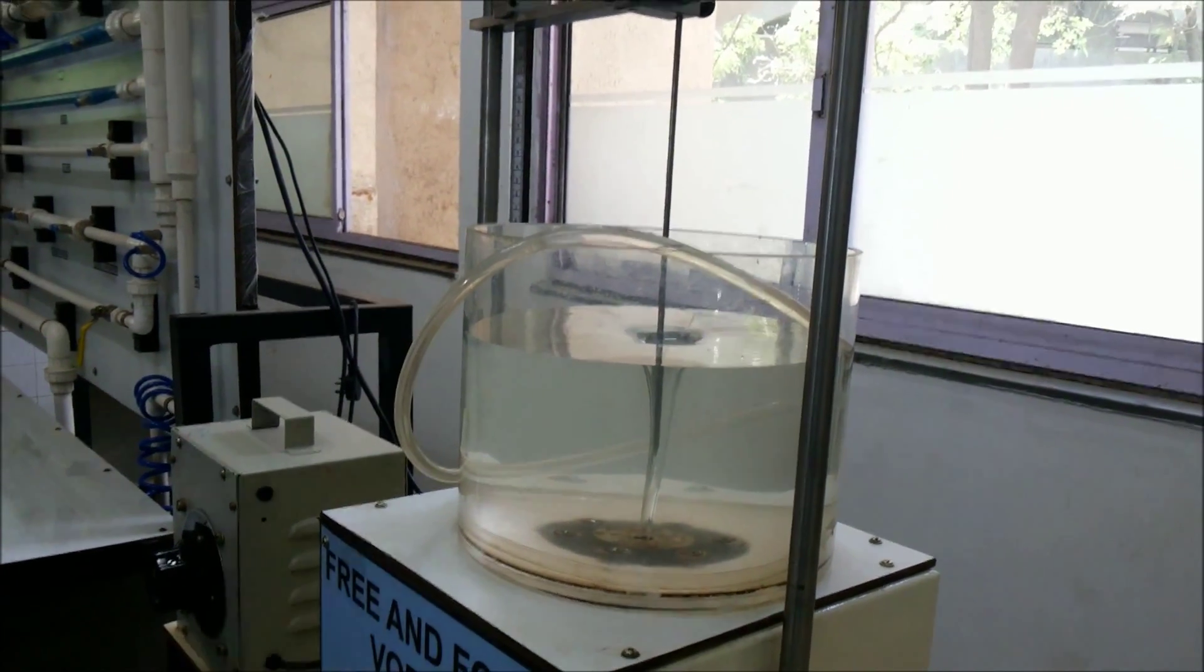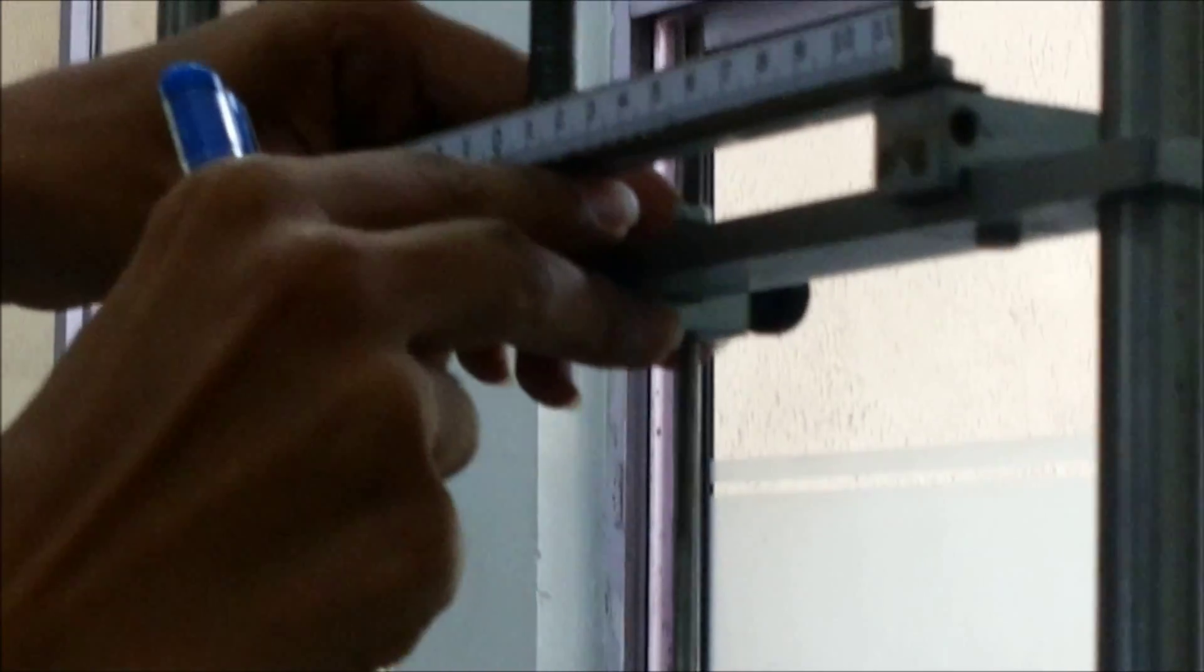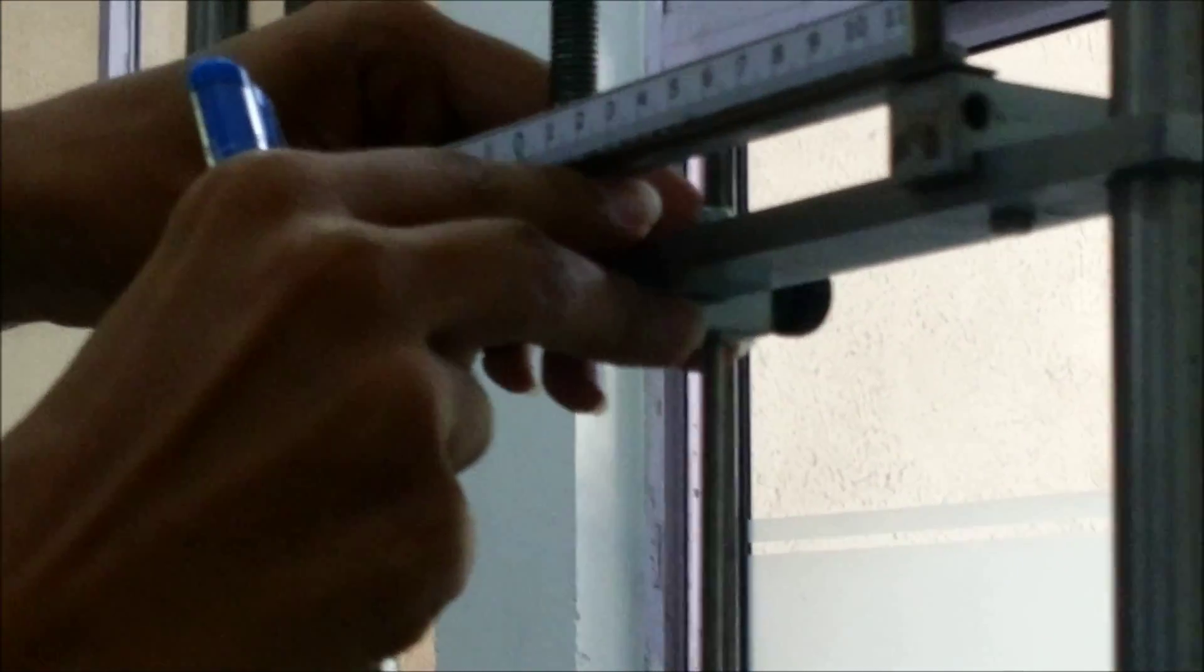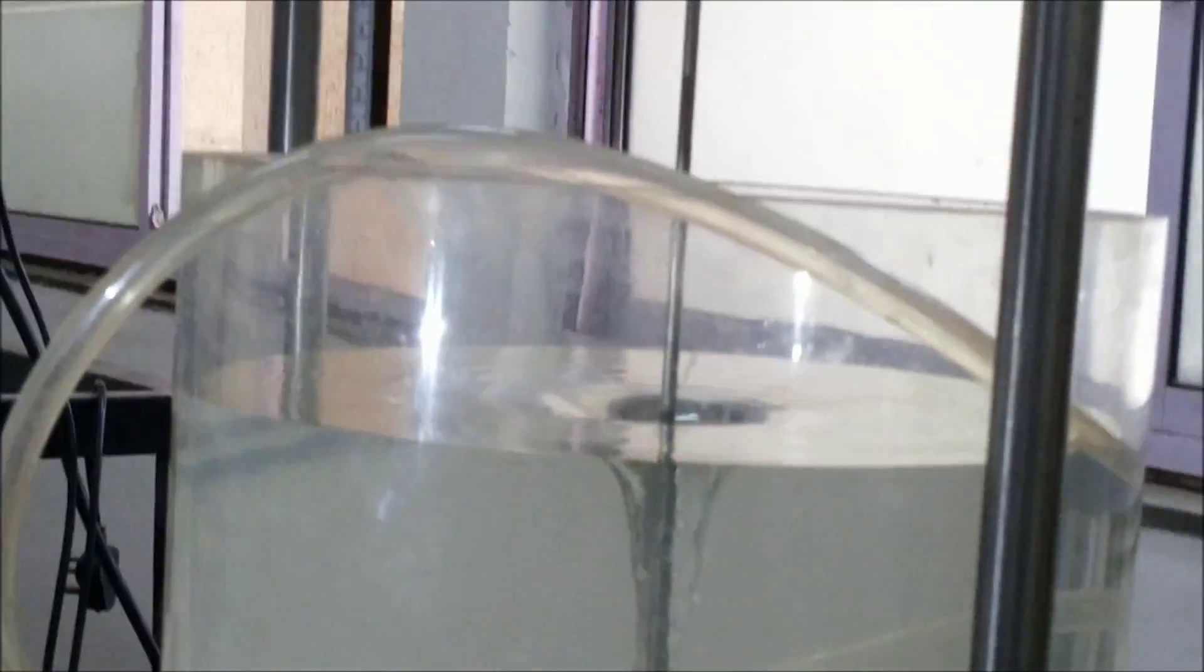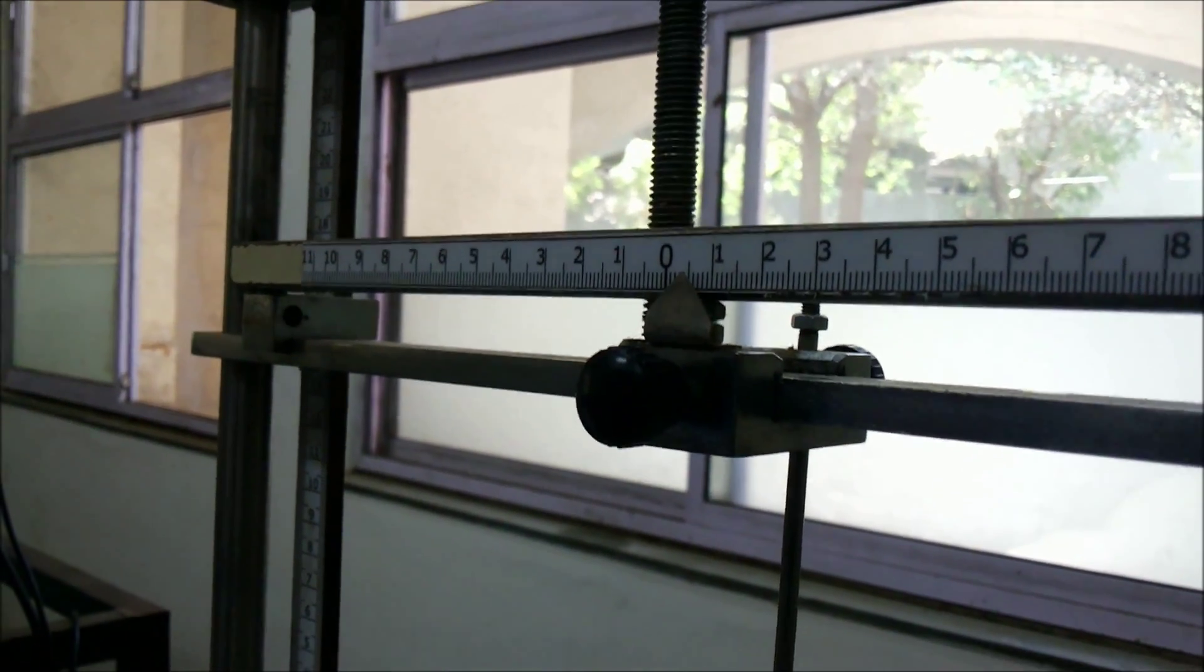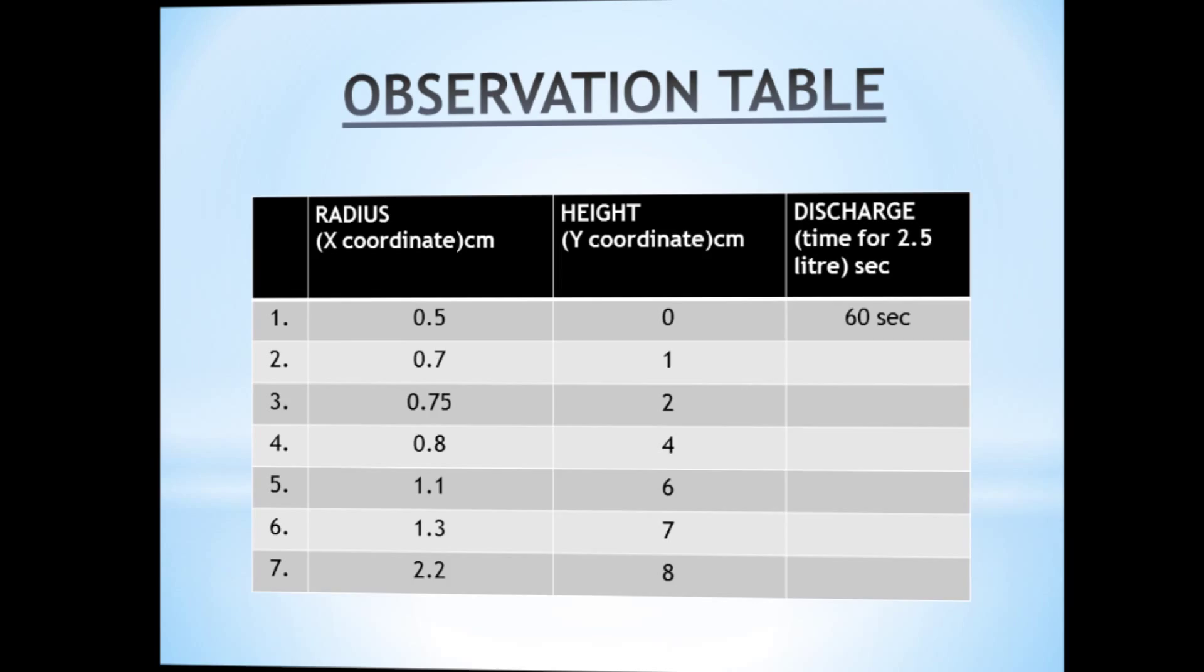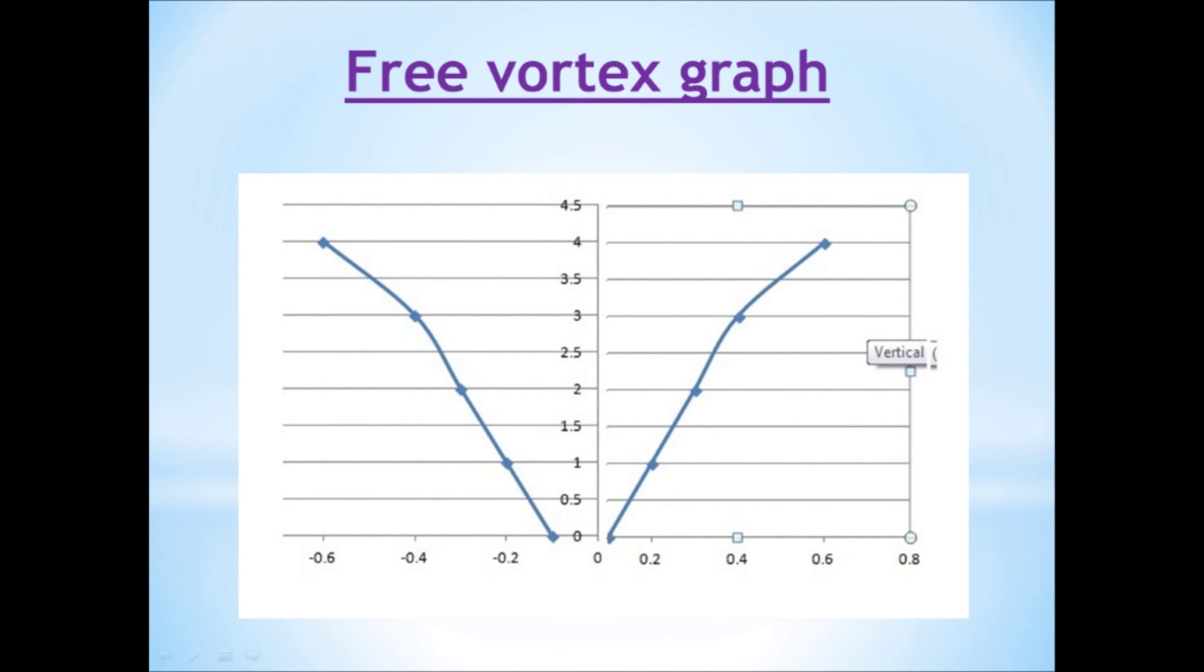Now for free vortex, stop the motor so that the cylinder will not rotate and the water will discharge by itself from the orifice, creating free vortex as shown. Note that before taking the readings, please make sure the flow is steady. If not, then adjust the valve and make the flow steady. Now note down the readings same as forced vortex and fill up the observation table and plot the coordinates on the graph.